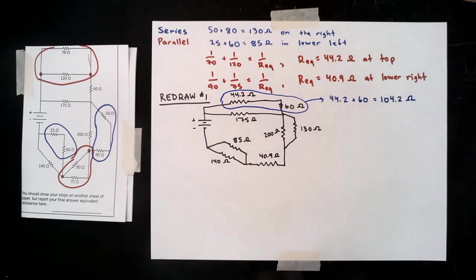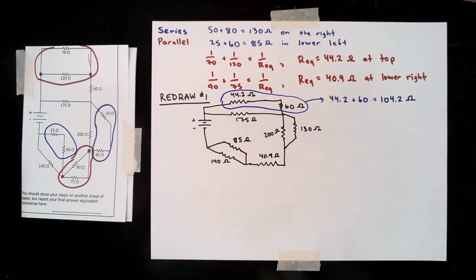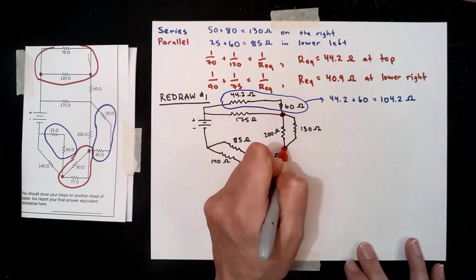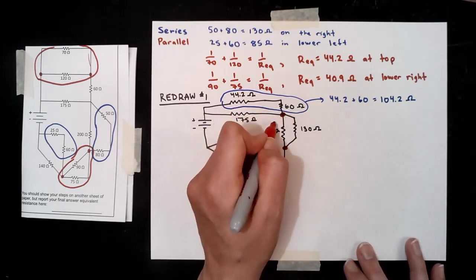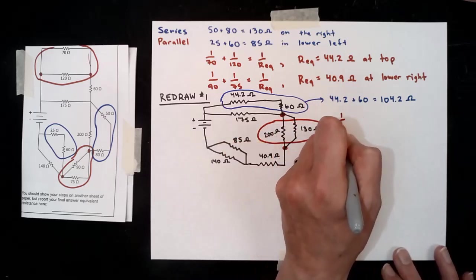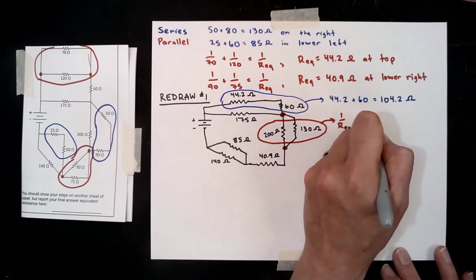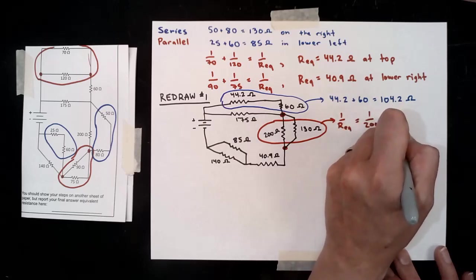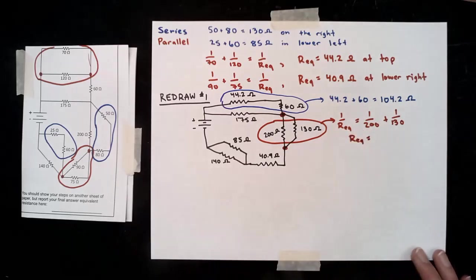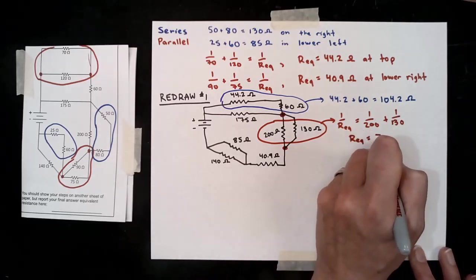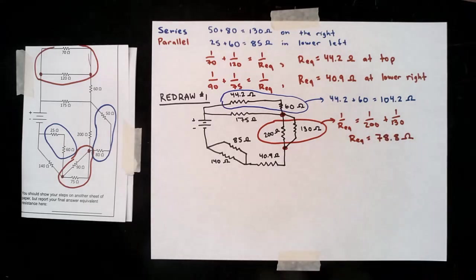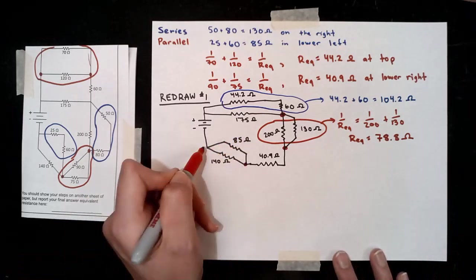I really encourage you to kind of draw the two junctions for something you think is in parallel, and then actively trace out the two places and make sure that only those resistors that you're talking about are in that space in between those two hooked together areas. So on the right here we have an equivalent resistance of 78.8 ohms. We've got one more parallel that we can do in this step.